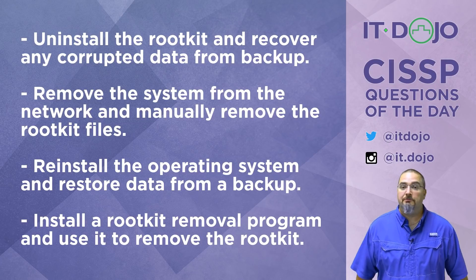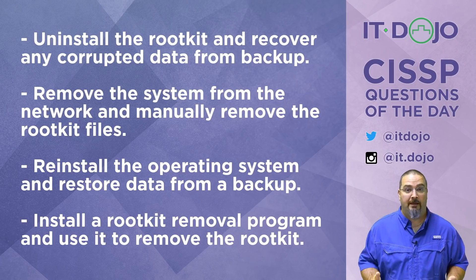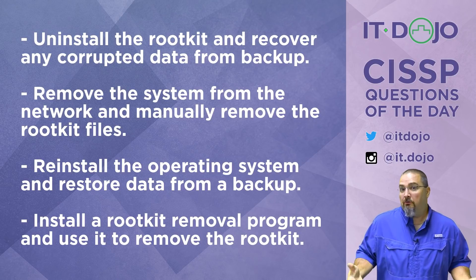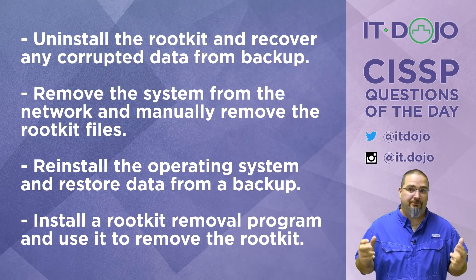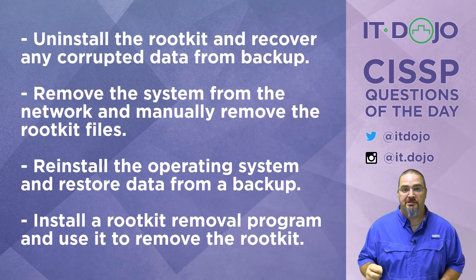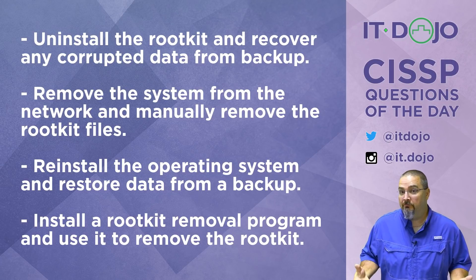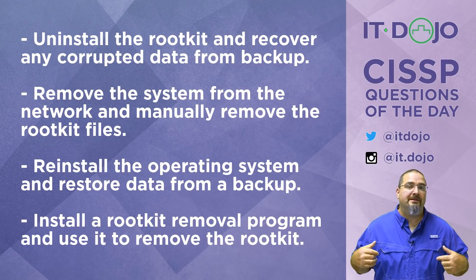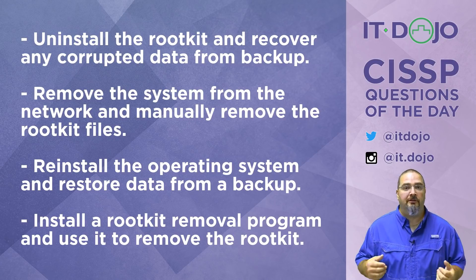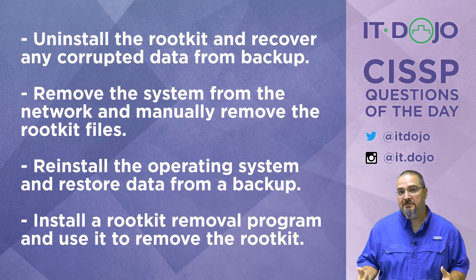Choice number one says the best way to handle this is to uninstall the rootkit and then recover any corrupted data from your backups. While that doesn't sound totally horrible, I would absolutely not recommend it. If you've been infected with a kernel-level rootkit, simply uninstalling it doesn't necessarily give you assurance that you've actually gotten rid of it — rootkits, particularly kernel-level rootkits, hide themselves by design. You also don't know what happened after you got rootkitted; other things may have been installed or critical components replaced, so your confidence in that system should be hovering around zero.